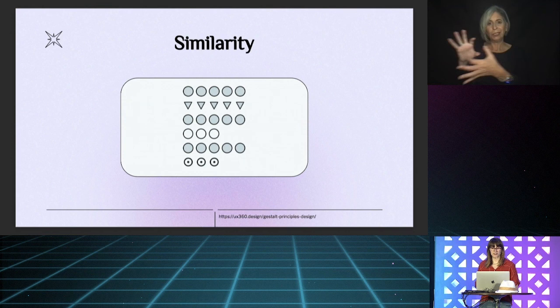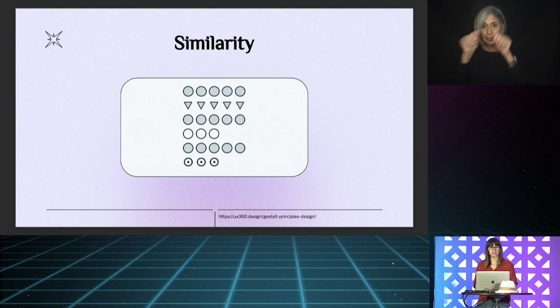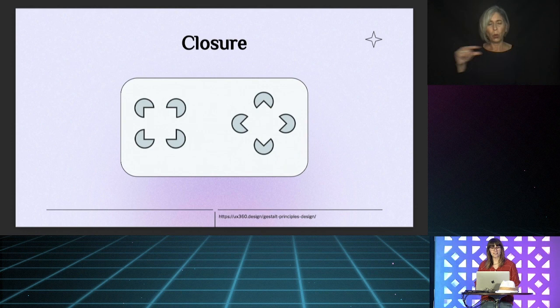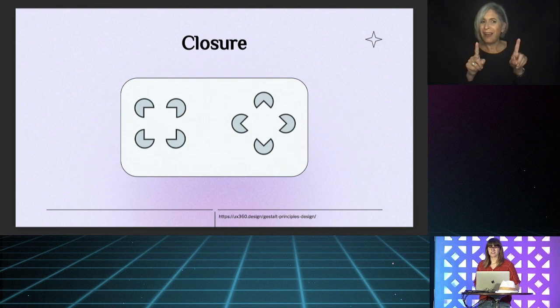Similarity means that we assume an association between similar elements. Here our brains will organize shapes into horizontal lines because the shapes and colors are the same horizontally, so we assume there must be a relationship — we don't see them as columns, we see them as rows. Closure means that we will try to fill in the missing gaps or spaces. So here we see a square and a diamond, despite the fact that there's not a square or diamond actually present — just these weird little Pac-Man wedge things. We've inferred the square and the diamond by mentally closing the gaps.